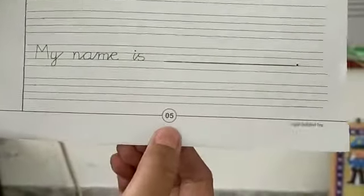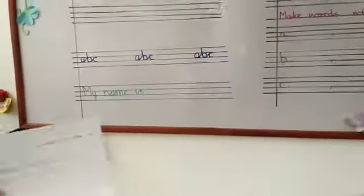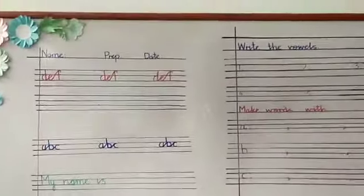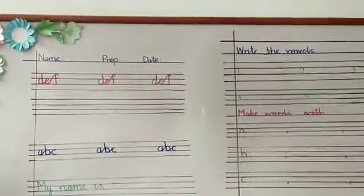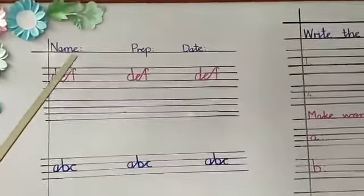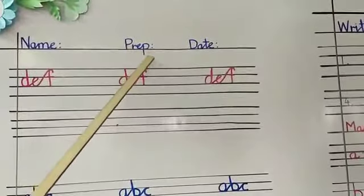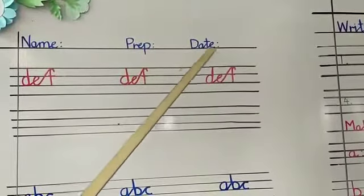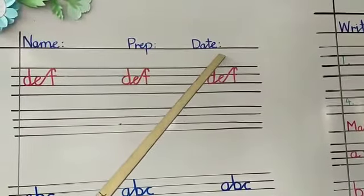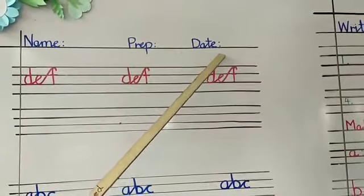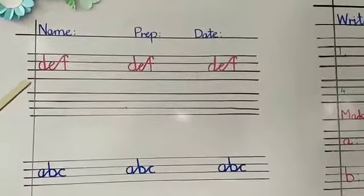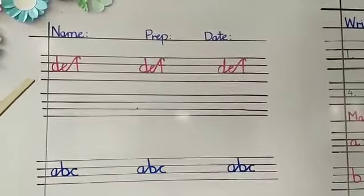Take out your English worksheet number 5 and your sharpened pencils as well. Write down your name, section and date. And come to the first question.